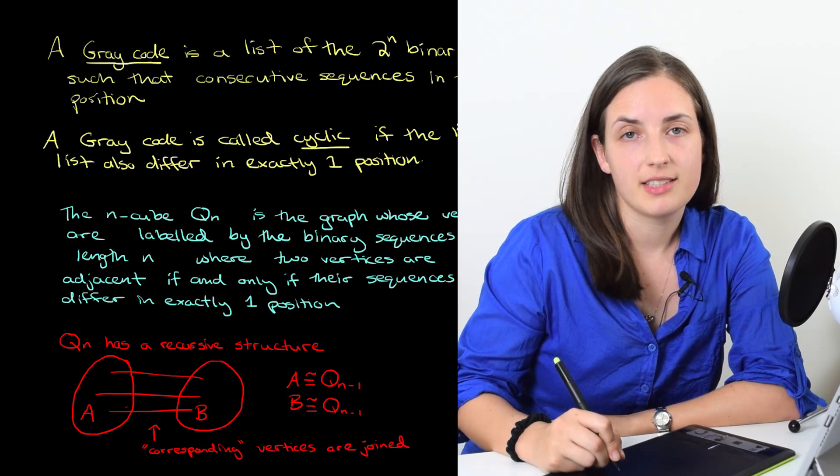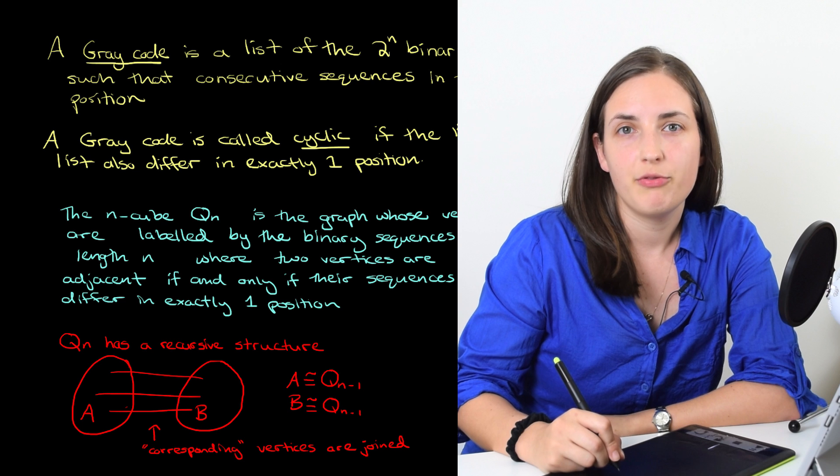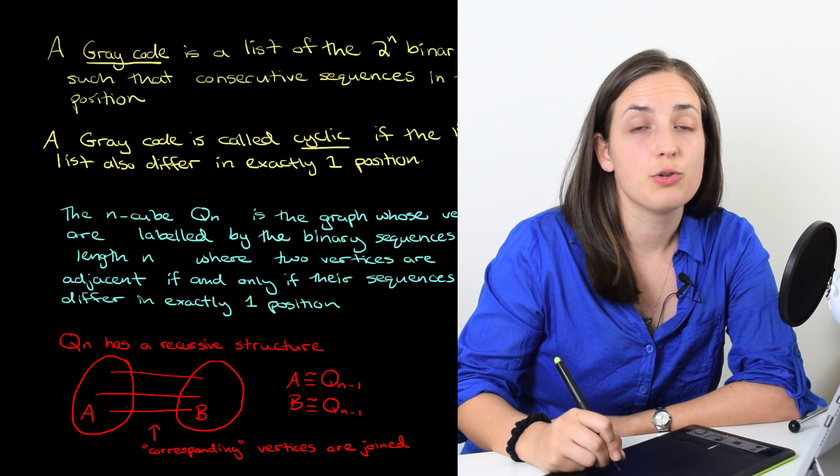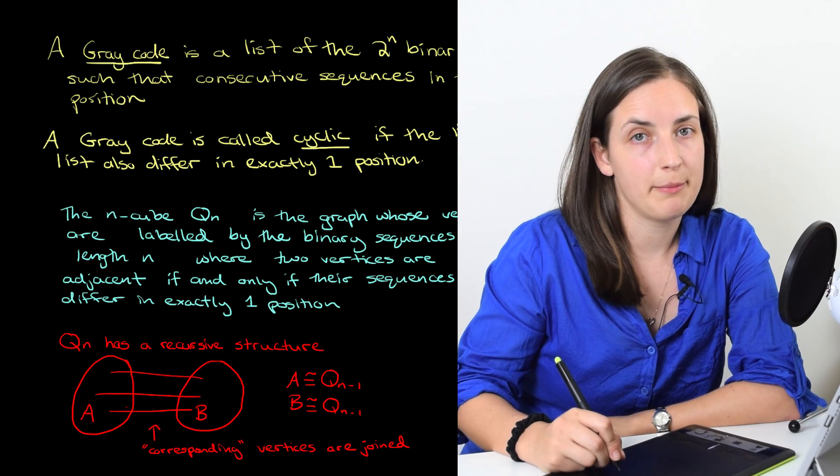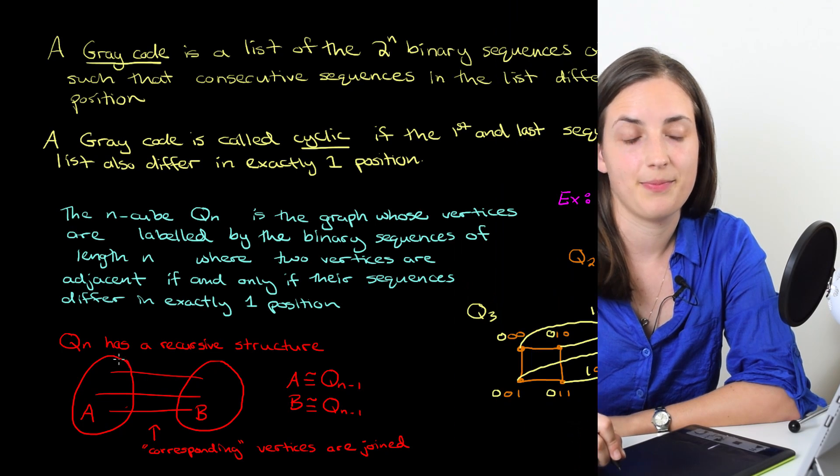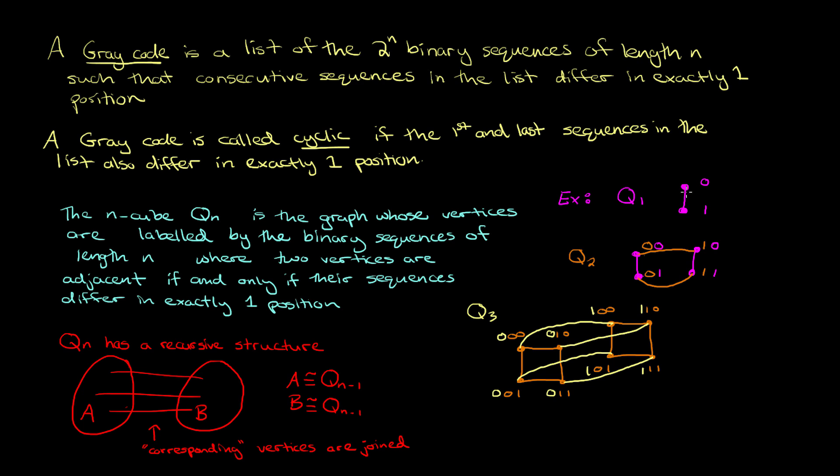Now that you've seen a couple of examples of an n cube, if you know what a Hamilton path is then I suggest you pause the video and look for a Hamilton path in each of the examples we've seen. In the first example a Hamilton path is just the single edge. In the second example we can find a Hamilton path by going like this through the cycle. In the third example let's find a Hamilton path by going from top down across up over to the other side down across and up. What you should notice is that a grey code is equivalent to finding a Hamilton path in the n cube.